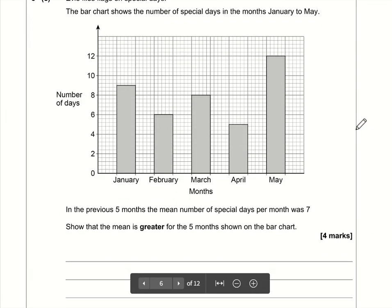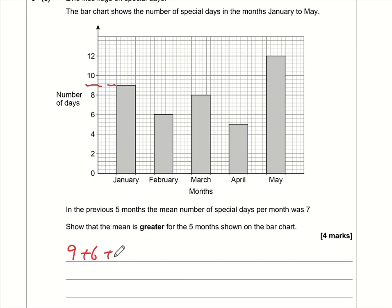Okay so for part C, what we need to do here is work out the mean for this period of five months. So it's going to be 9 plus 6 plus 8 plus 5 plus 12. The mean is the total divided by the number of values, and we can see there are 1, 2, 3, 4, 5 values. Now if we add up 9 plus 6 plus 8 plus 5 plus 12, 12 plus 8 is 20, 29 plus 6, 35 plus 5 is 40. So we've got 40 divided by 5 which is 8.